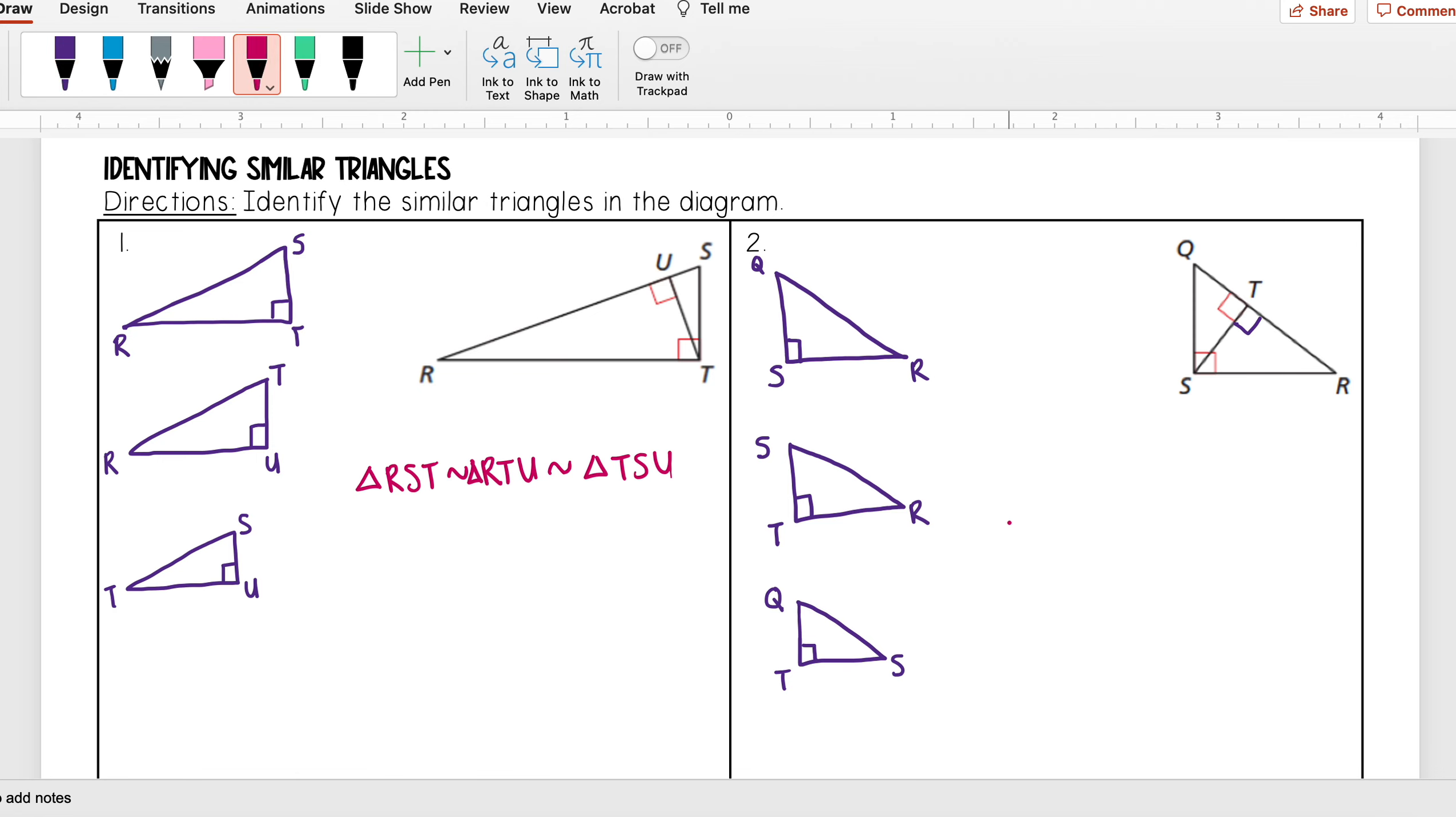So now I can go ahead and just go in order to write my similarity statement. I want to go QRS, SRT, and QST.